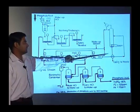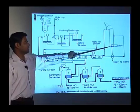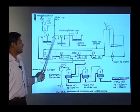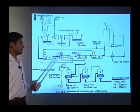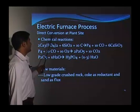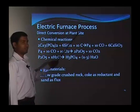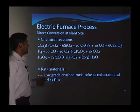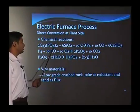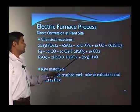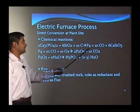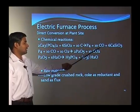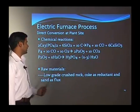Whatever solvent is there, we can evaporate and use for the other reaction zone. The next thing we will see is the electric furnace process, which is direct conversion at the plant side. The chemical reaction is: phosphate rock plus sand plus carbon gives phosphorus, carbon monoxide, and calcium silicate.